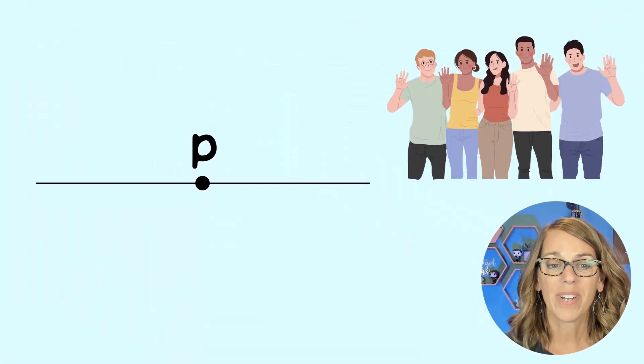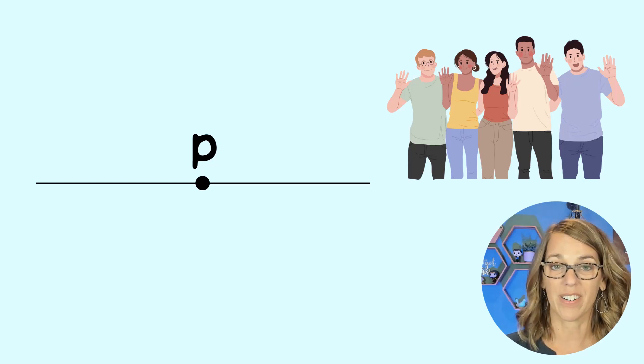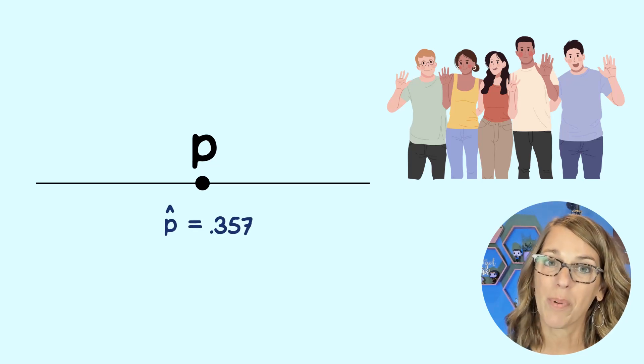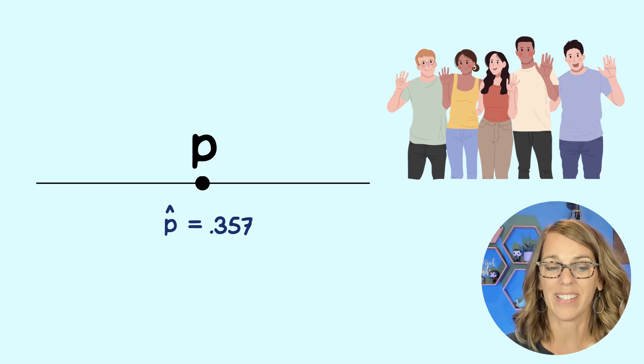So how does this help us come up with our confidence interval for that population proportion? Well, we're going to start by building it with our population proportion here. We don't know what it is, so we're going to use our sample proportion to estimate that.